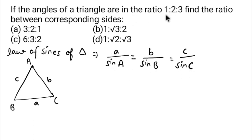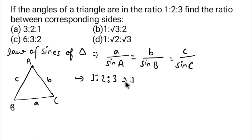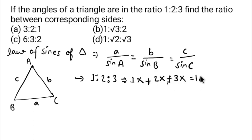Now how do we apply this law here? First, I need to find the angles of this triangle. We are given the ratio of angles as 1:2:3. I assume the common term is x, so my angles are 1x, 2x, and 3x. The sum of interior angles of any triangle is 180 degrees.